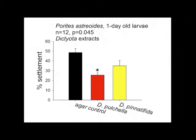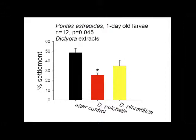With extracts of Dictyota species and Porites larvae, you can see in our agar controls with just the solvent incorporated, and all assays analyzed by ANOVA followed by Dunnett's test — a star indicates significantly different from control. This is interesting because Dictyota pulchella, recall, had chemically rich extracts that weren't very effective against herbivores, but here they do seem to deter the settlement of the larvae.